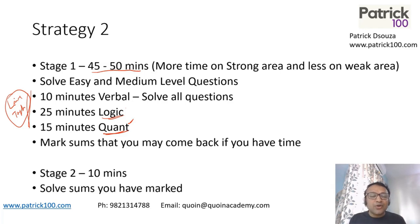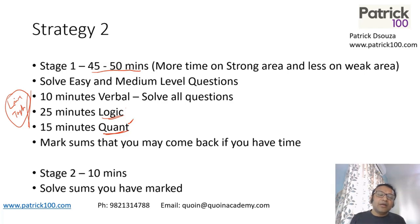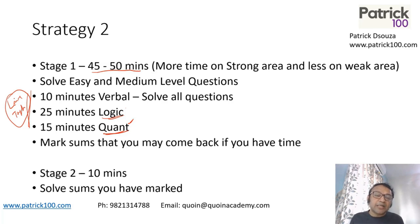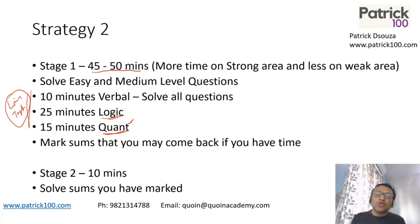In Stage 2, use the last 10 minutes to return to the sums you marked and solve them. The overall idea is to go through the entire paper, spend more time on your strong area, and less time on your weak area. It's okay to cover the entire Quant section in just 5 minutes and leave it if you're really weak at it. Similarly, if you're weak in Verbal and won't score well in RCs or para-jumbles, you can skip them. Base your strategy on your strengths and weaknesses. Remember, there is no sectional cutoff, so try to maximize your overall marks. Look at both strategies and choose whichever you're comfortable with.